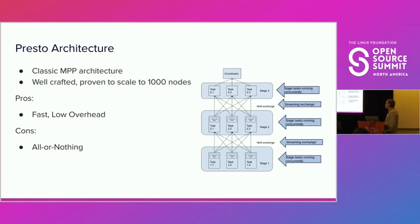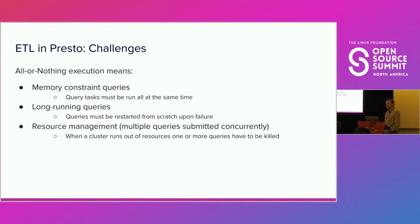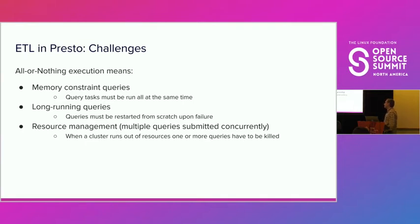But at the same time, with this execution model, a query is required to be executed all at once in an all-or-nothing fashion. This all-at-once aspect imposes very significant restrictions. Since all tasks must run concurrently, it increases the amount of memory that must be available in the cluster. It also makes it very difficult to tolerate failures — in case of a node crash, very long GC, or other problems, if any node crashes, it wipes out the entire query because all tasks are interconnected.